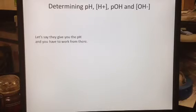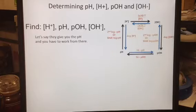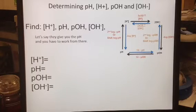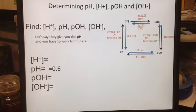Now let's say you are given the pH and you have to work from there. You're still going to use the same reference square and the exact same formulas, just where you're starting and ending is going to be different. So they said they gave you 0.6 for the pH. That means you're here.